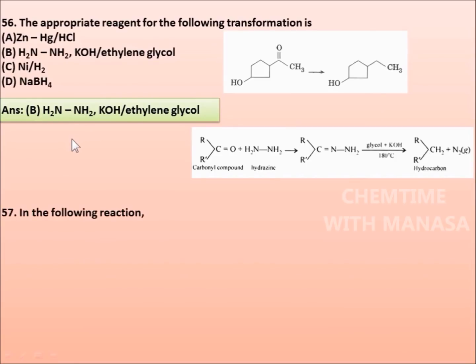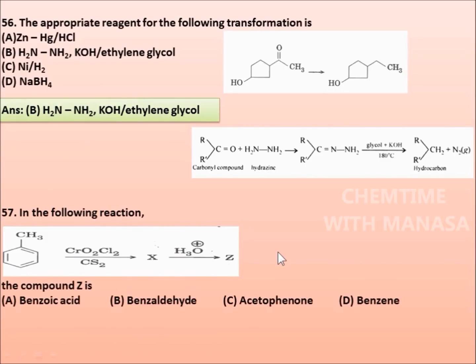Question 57: In the following reaction, toluene when reacts with chromyl chloride, we get a compound X, which on hydrolysis gives Z. The compound Z is benzoic acid, benzaldehyde, acetophenone, or benzene. The correct answer is benzaldehyde.